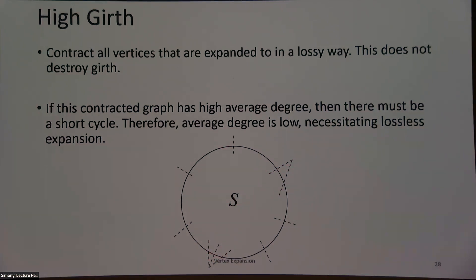If I contract all those edges, I only reduce the girth by a factor of at most two. If the contracted graph has high degree, then for a small set I'm able to find some short cycle. The point is: if the original graph has high girth, then the average degree after contraction must be low, and therefore it must expand losslessly.